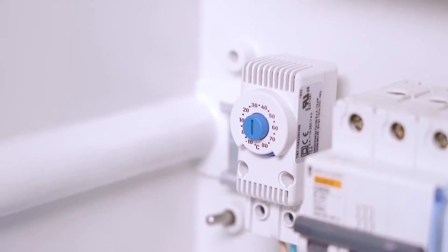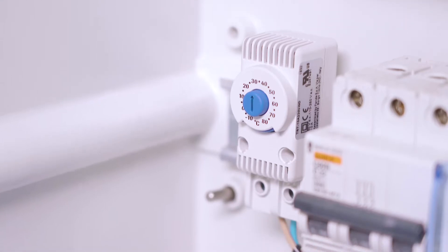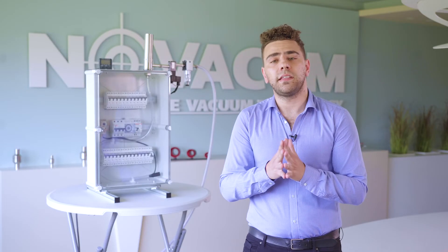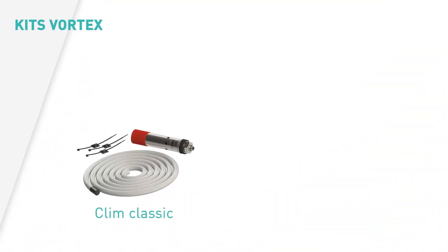One for the vortex tube, one for the thermostat which is directed by the solenoid valve. We have two kits. The classical kit contains a vortex tube and its cold air distribution duct equipped with a silencer.